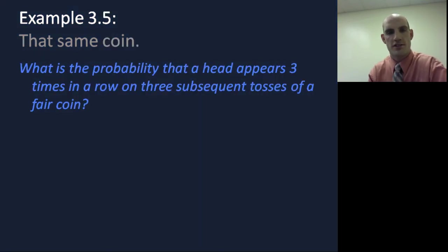Okay? The next one. I want you to try this one. What's the probability that a head appears three times in a row on three subsequent tosses of a fair coin. Fair coin meaning equally as likely to have heads as tails. So remember how many choices you have for each and figure out what the probability of tossing three in a row is.